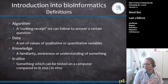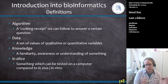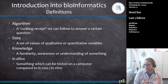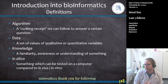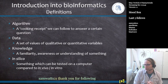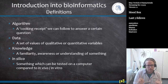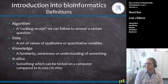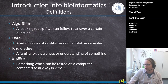Some more definitions: an algorithm is like a cooking recipe that we follow to answer a certain question. Data is a set of quantitative or qualitative values — and we will spend a whole lecture discussing the difference between quantitative and qualitative variables. Data is not the same as knowledge.